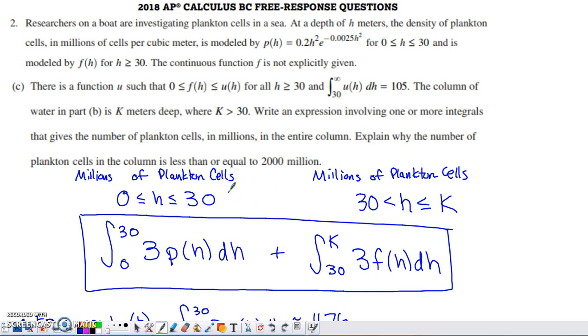So here's what I thought to do. We've already done this for 0 to 30. Back in part B, if I want the number of millions of plankton cells on the interval 0 to 30, I have to do that exact same definite integral.